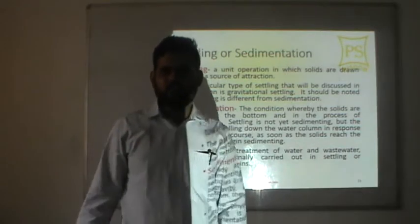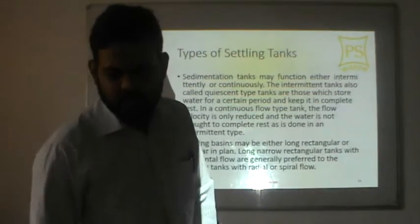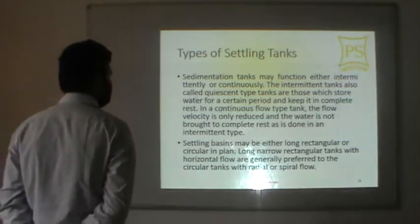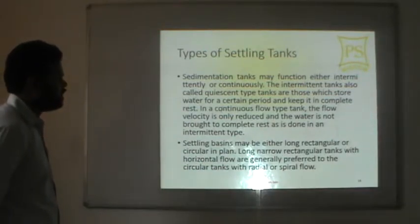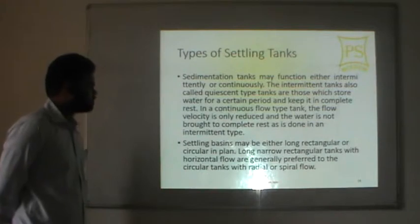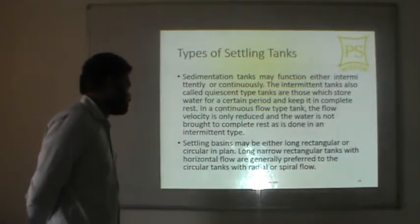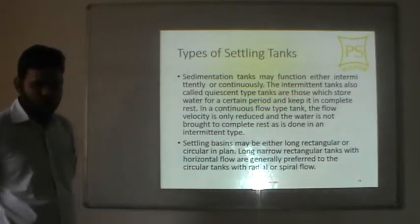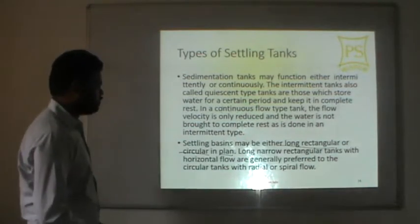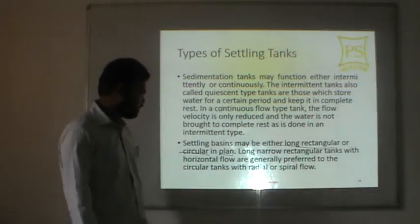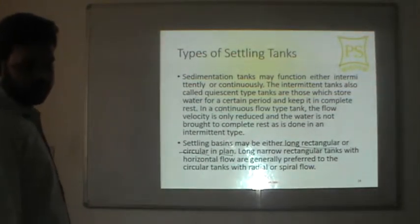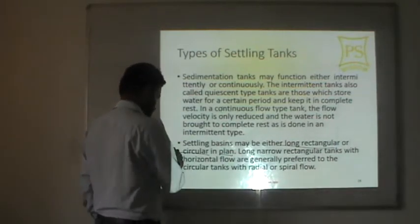Types of sedimentation or settling basins: a sedimentation tank may function either intermittently or continuously. Intermittent types, also called fill-and-draw tanks, store water for a certain period and keep it in complete rest. In continuous flow type, the flow velocity is only reduced. Settling basins may be either long rectangular or circular in plan. Long narrow rectangular tanks have horizontal flow, while circular tanks have radial or spiral flow.